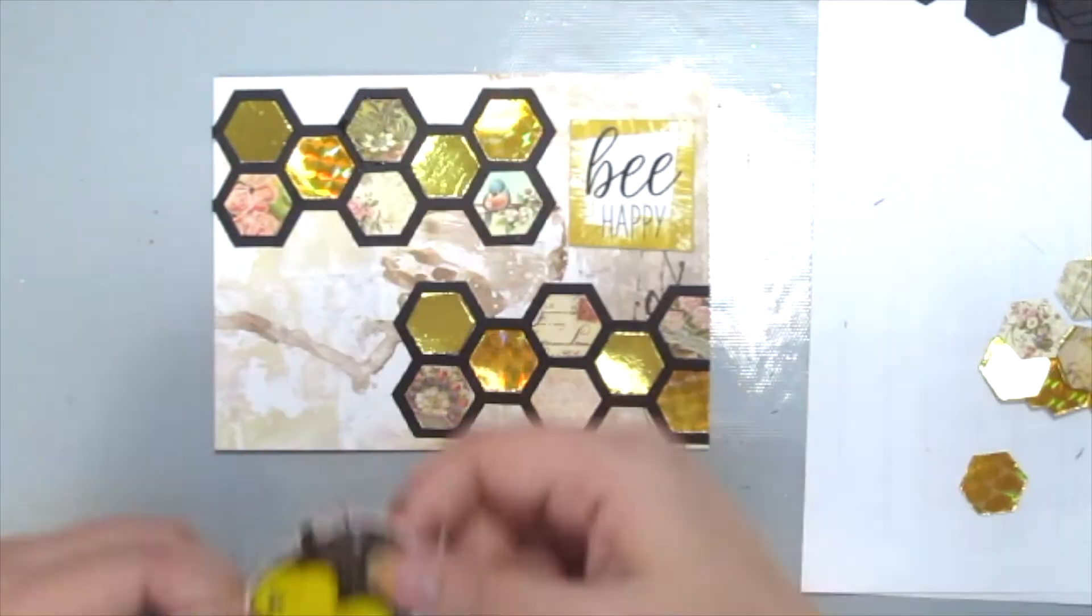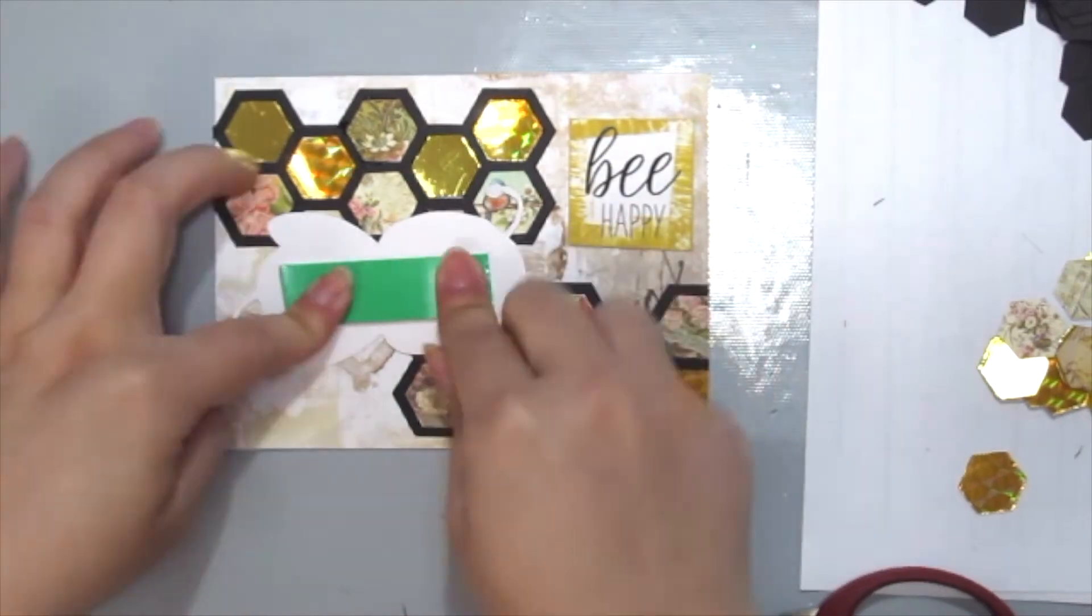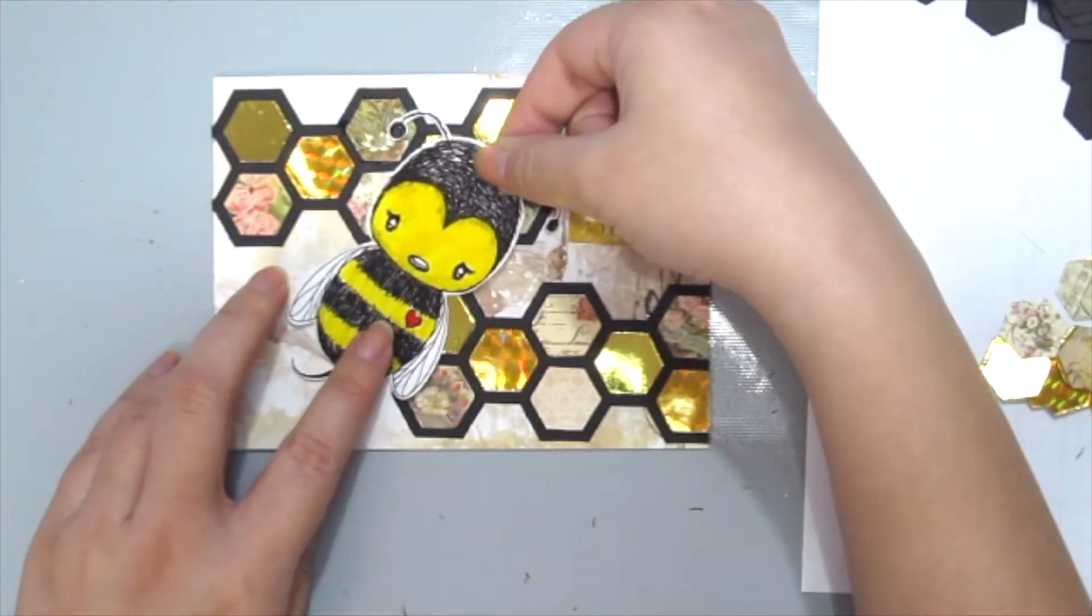Finally, it's time to adhere the bee and the sentiment onto the card. I'm just adding some foam adhesive to the back of the bee to pop him up.